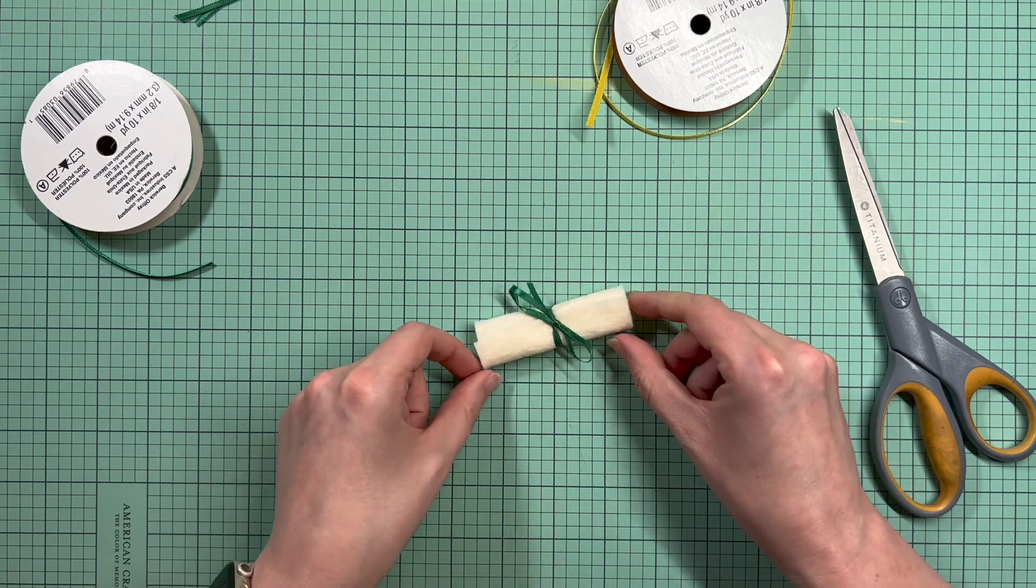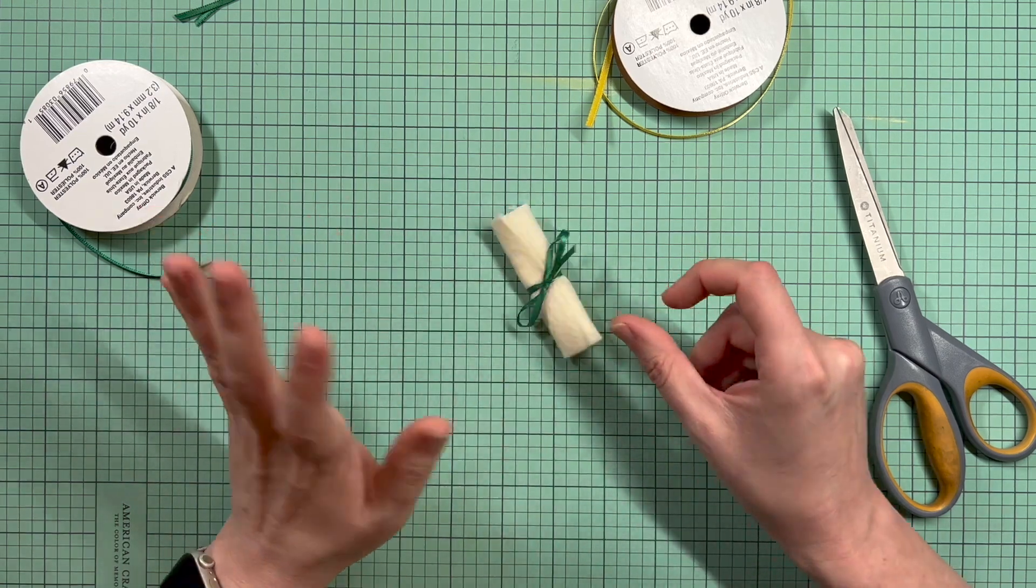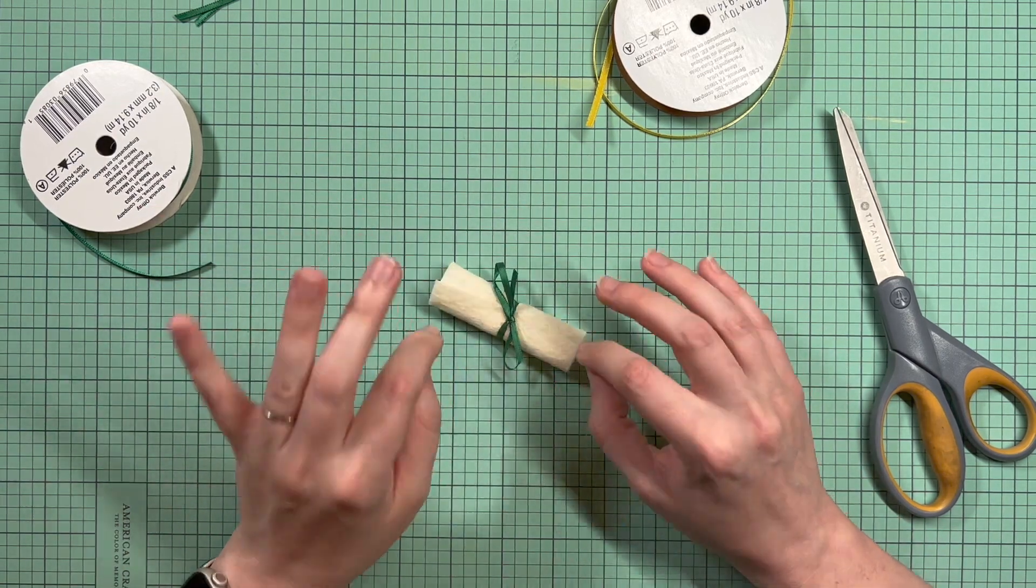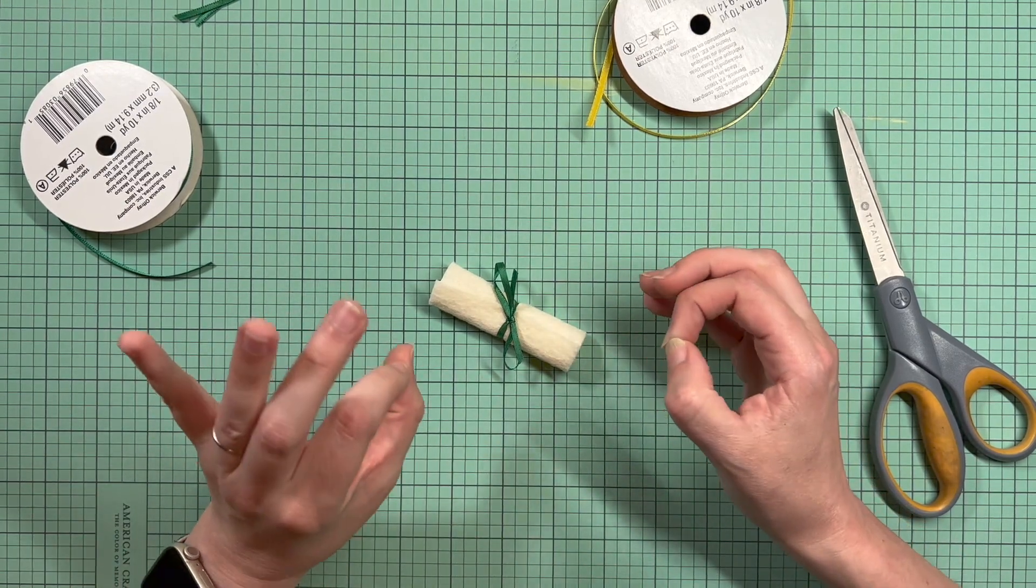So there is our mini diploma. You could just be done here and use it as like a little table scatter or something like that. However, since I'm going to make mine into an ornament for my tree, I'm going to add a hanger to mine.